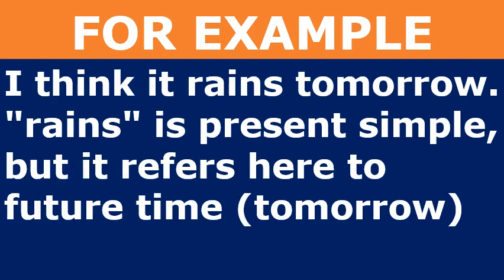Present tense does not always refer to present time. For example: 'I think it rains tomorrow.' Here 'rains' is present simple, but it refers to future time — that is, tomorrow. So 'rains' is present simple but refers to future time.